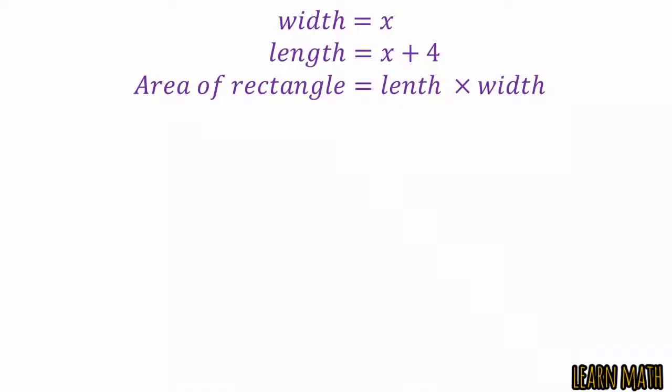According to the question, the area is 252 cm², so we can write x(x + 4) = 252. Let's simplify this and we will get x² + 4x - 252 = 0, which is a quadratic equation.